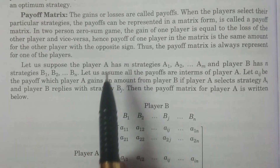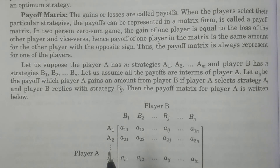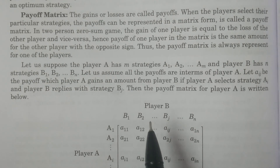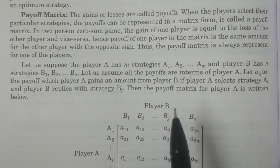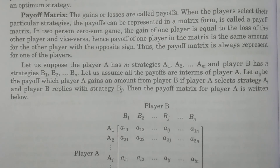If one player gains 10 rupees, the other player's payoff is minus 10 rupees. If one player has a gain, it is minus that for the other, as the algebraic sum of gains and losses equals zero. Each player has a gain and loss, and in a two-person zero-sum game, the sum of gains of both players equals zero.